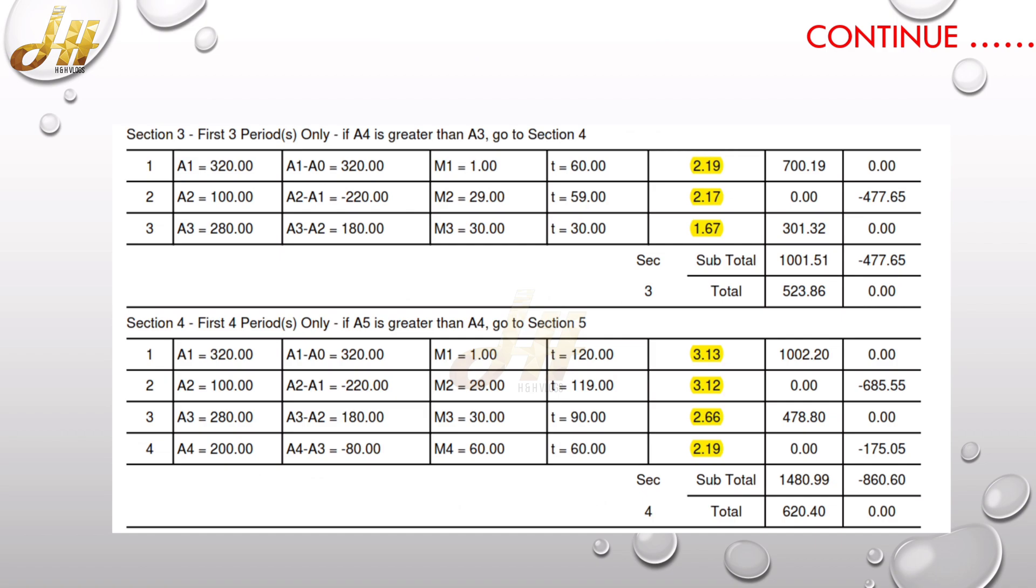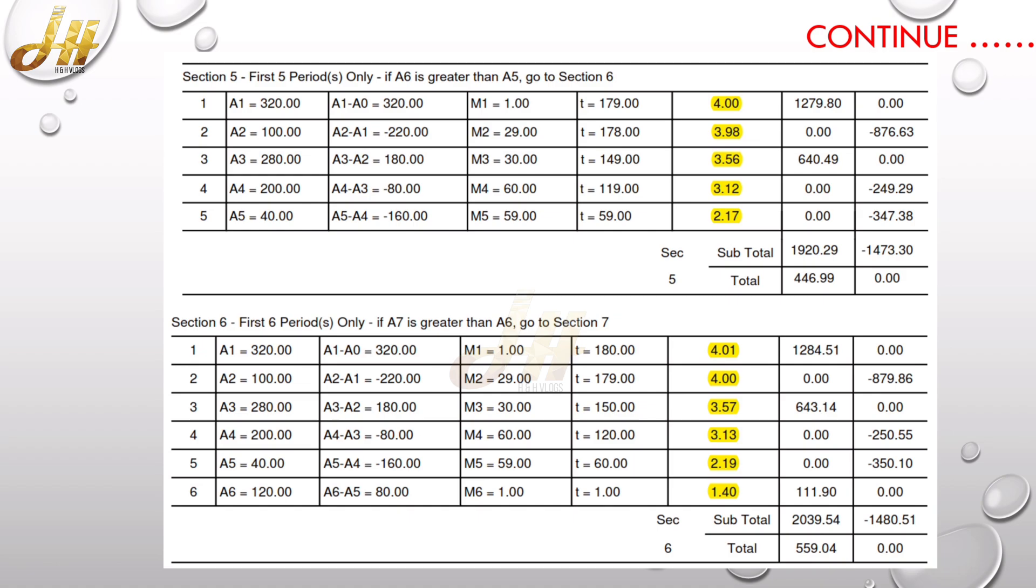So for the third period and fourth period, the KT factor values are also highlighted here. For 60 minutes it is 2.19, 30 minutes is 1.67, 120 minute is 3.13. And here you can see in the total value of each period, it's 523.86 and 620.40 for the fourth period. Fifth period, the maximum time is 179, which is 4.19. For 178 minute, the KT factor value is 3.98, and the total value comes as 446.99.